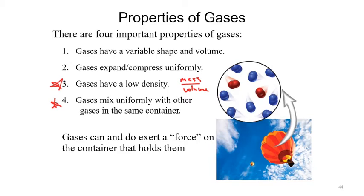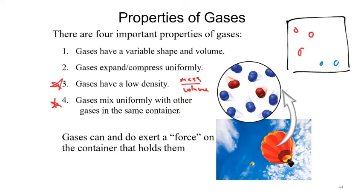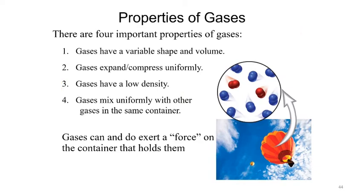Because gas particles are so spread out, we're going to get uniform mixtures. So if we have multiple different gases in a container, I would expect them to mix uniformly. If we had two types of gases, we would not expect them to be split half on one side and half on the other — that doesn't happen with gases.